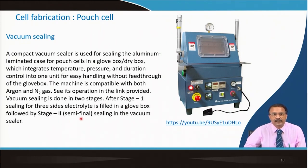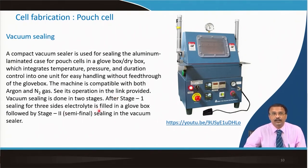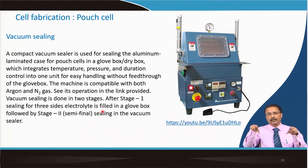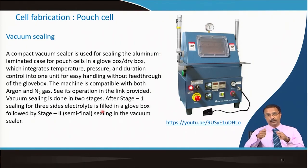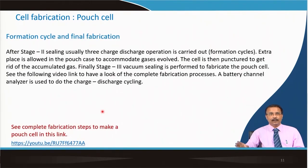Followed by the second stage: a semi-final sealing in a vacuum sealer. The second stage sealing is done after electrolyte filling. So, electrolyte filling is done after the first sealing, and then using the same machine you do the second sealing. We still call it semi-final sealing — I will explain why.